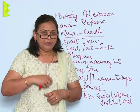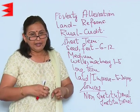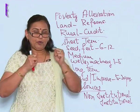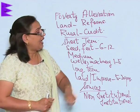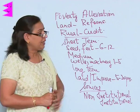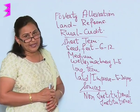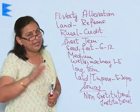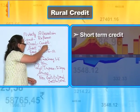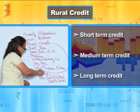whenever there is a death in the family, or they have to buy machines or land, there is no proper saving with the farmers and thus they tend to take credit. Rural credit in India can be categorized into three categories: short-term, medium-term, and long-term credit.